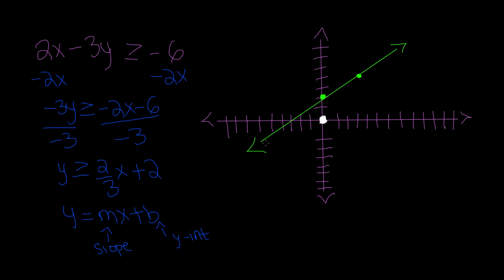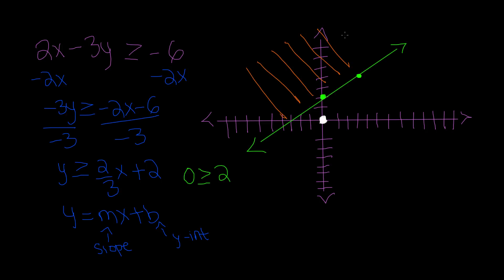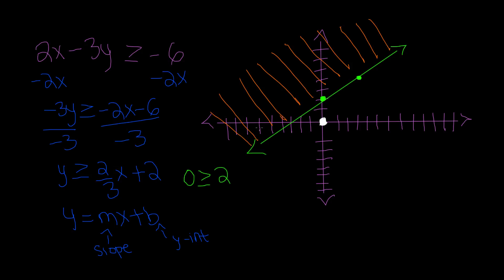Now that we have graphed our line, let's figure out where we're going to shade. Since this says that y is greater than or equal to two-thirds x plus 2, we can use a test point. Let's use the origin: y equals 0 is greater than or equal to two-thirds times 0 plus 2, which gives us 0 is greater than or equal to 2. Well, 0 is not greater than or equal to 2, because 0 is less than 2. So that means this is not where the solution lies. That means we have to shade above this line — that's where all the solutions lie. So all the solutions to this inequality, which is 2x minus 3y is greater than or equal to negative 6, lie on top of this line.